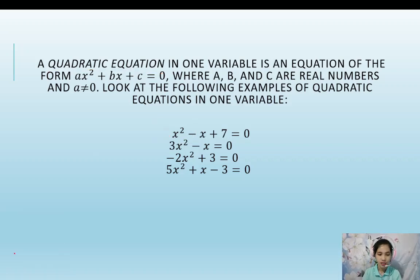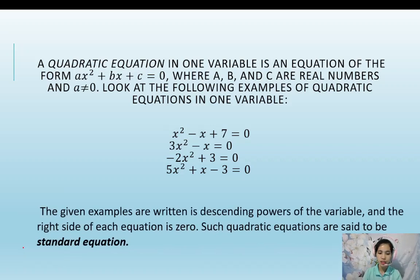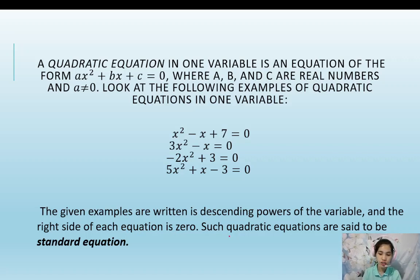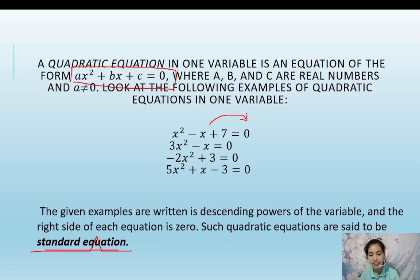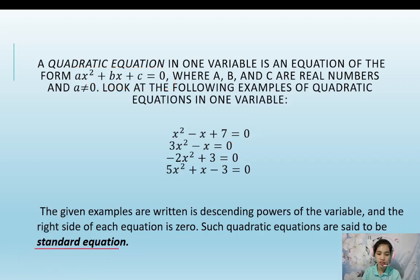Now let's move on. The given examples are written in descending powers of the variable, and the right side of each equation is 0. Such quadratic equations are said to be in standard form. When the right side is 0, it is in standard form.